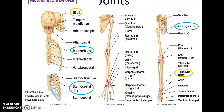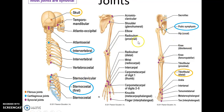Most joints we think of are synovial joints. Some fibrous joints are found in the skull or the distal tibiofibular joint. Cartilaginous joints include the intervertebral discs, the sternocostal connection between rib one and the sternum, and the pubic symphysis.